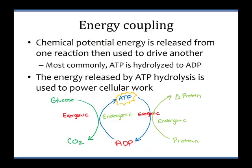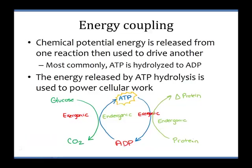Every single time this exergonic reaction happens, you're only going to be able to capture a fraction of the original energy released. Going back to glucose being broken down into carbon dioxide — of that exergonic reaction, only about 30% will get transferred over into forming ATP. The other 70% or so is going to be released as body heat. Remember, second law of thermodynamics.